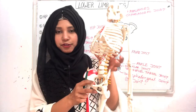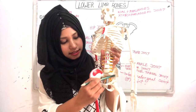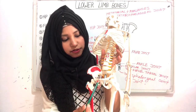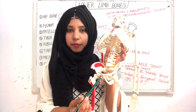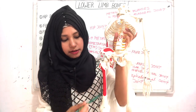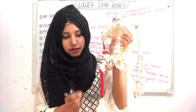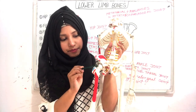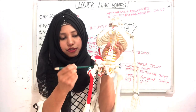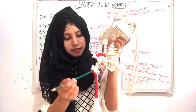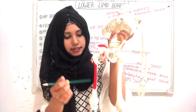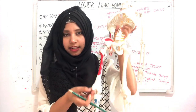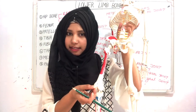Now I will show you here. This is our hip bone. These two hip bones join together and make the pubic symphysis. This is our femur — this is the head of the femur. This is our hip joint. This is the greater trochanter and this is the lesser trochanter. This small and tiny bone is the patella.